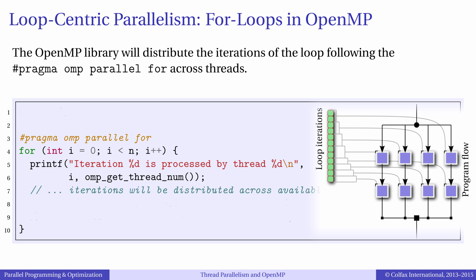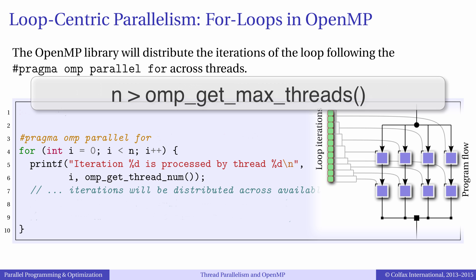Usually parallel loops contain many more iterations than there are threads. For example, on an Intel Xeon Phi coprocessor with 240 logical cores, good parallel loops will have thousands or millions of iterations. This will not oversubscribe the system. OpenMP will make sure that no more than one iteration is processed in each of the threads.